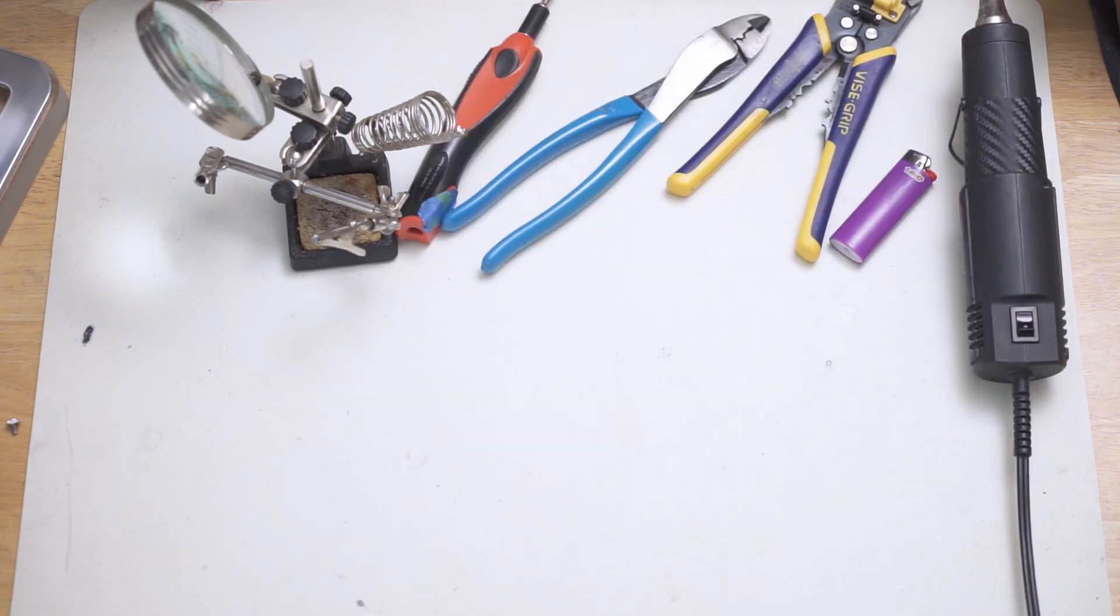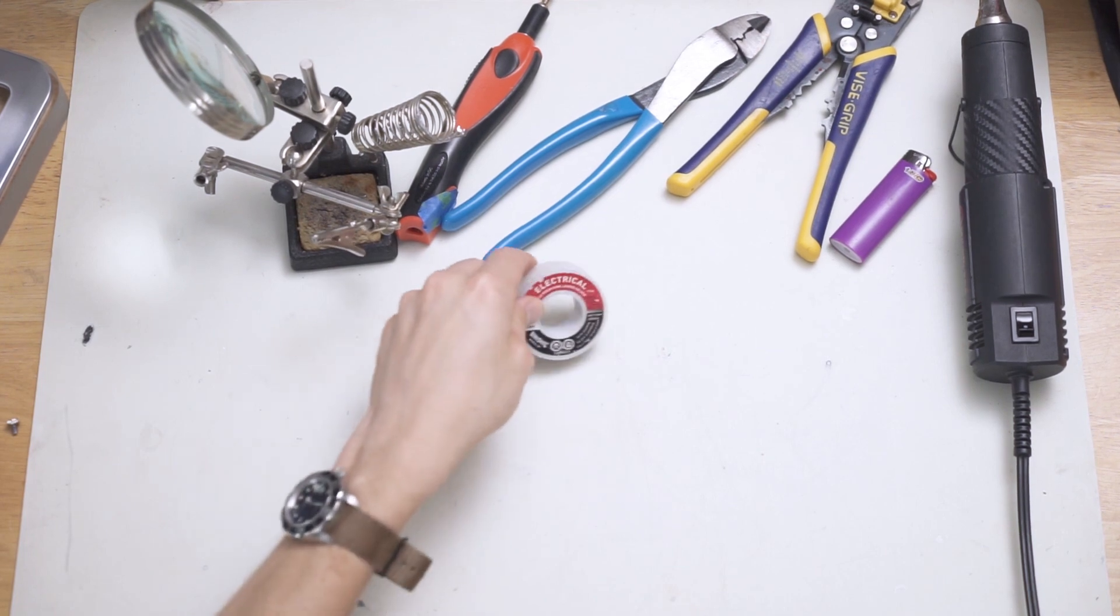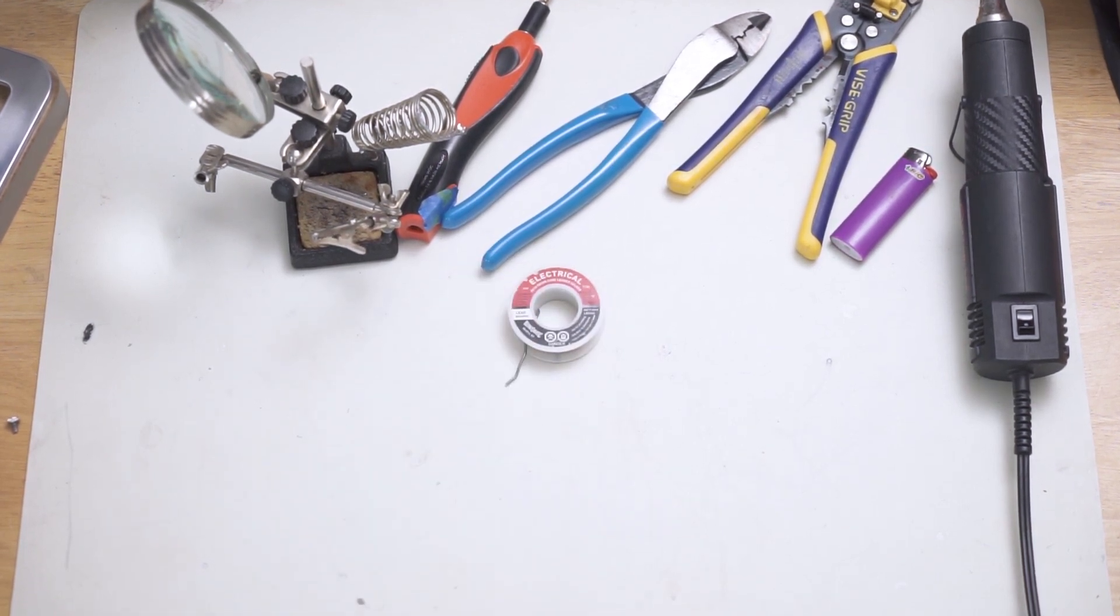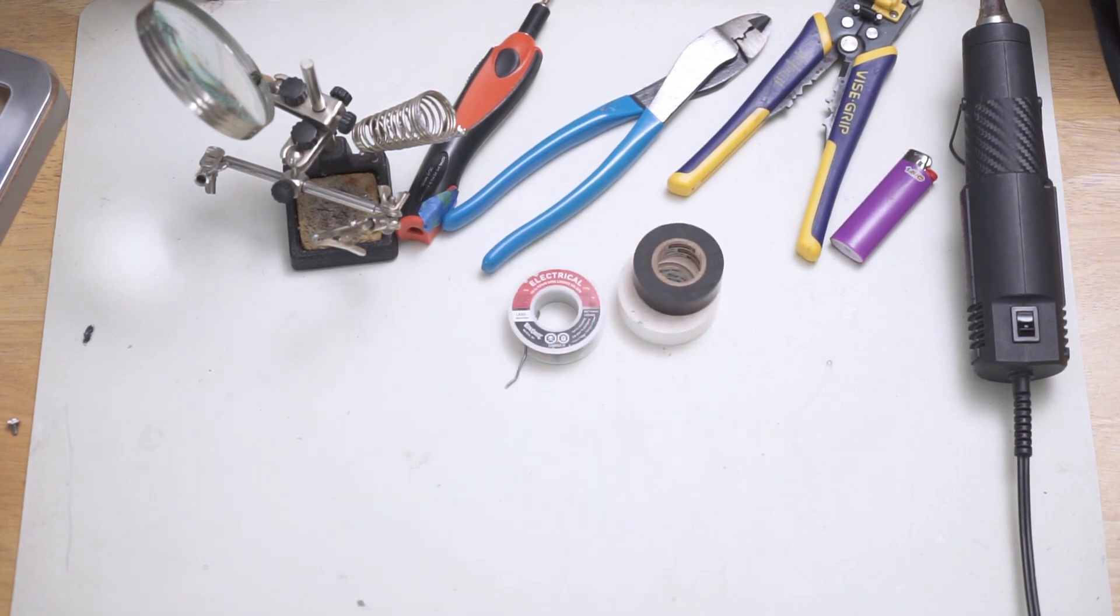For our consumables we're going to want some rosin core solder, and I like the Benzomatic brand. It's easy to find, it's cheap, and it works really well. You'll want electrical tape, white or black, depending on how dark or light you want your sleeving to be.